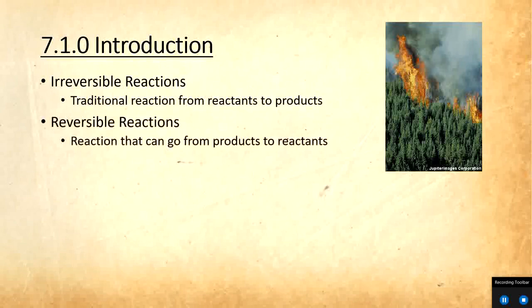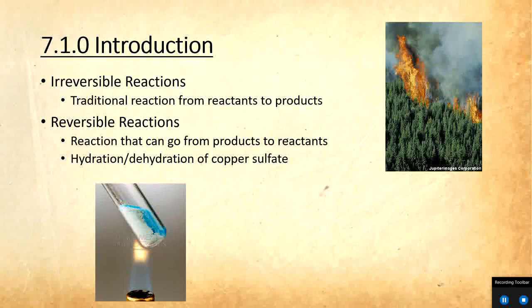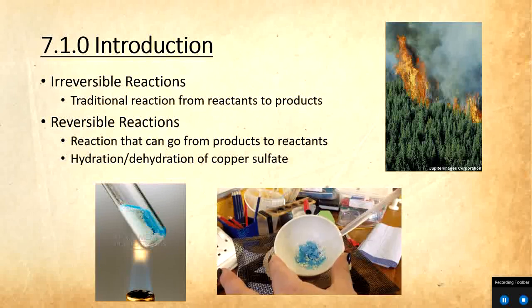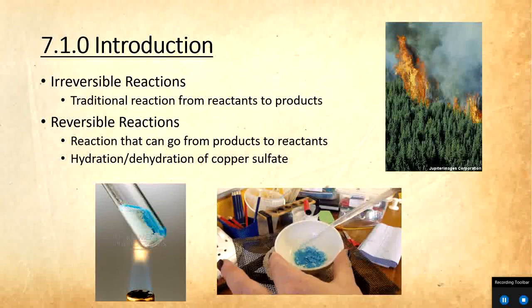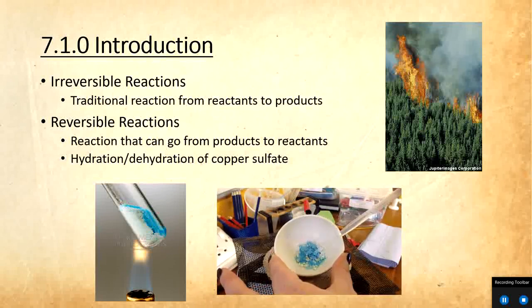Now, what we also have are reversible reactions. These reactions can go in the normal direction we think of from reactants to products, but they can also go from products to reactants. So we can do the reaction in reverse. One example of this is the hydration and dehydration of copper sulfate. Copper sulfate is the blue substance that we're familiar with. If you heat up that solid blue copper sulfate, the crystallized form, it will turn into a white powder or white solid substance. The water is evaporating off of the compound, breaking off of the copper sulfate, leaving us with the anhydrous form, which is white. But we can reverse this reaction by just adding water back in. If we take our white anhydrous copper sulfate, add some water, you'll see that it turns back to its blue color. So that is a reversible reaction.